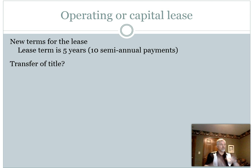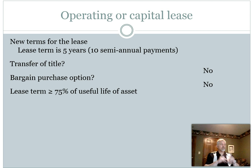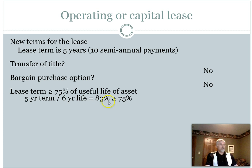Once again, we ask ourselves: does title transfer? We didn't change anything there, so the answer is still no. Was there a bargain purchase option? We look at the original terms of the lease contract — no mention of the ability to purchase the asset, so we answer no to that as well. Now here's where we get into the impact of some of the changes. The question is: is the lease term greater than or equal to 75% of the useful life? The lease term is five years out of a six-year useful life, which is 83% — clearly more than 75%. Answering yes to any one of the four questions alone makes this a capital lease.